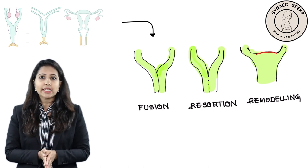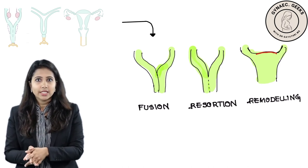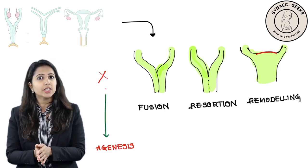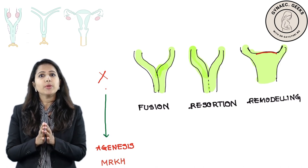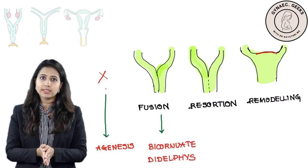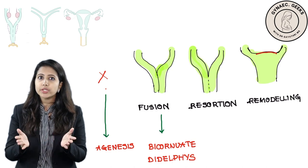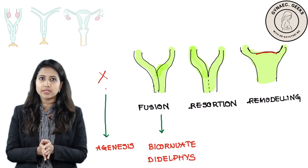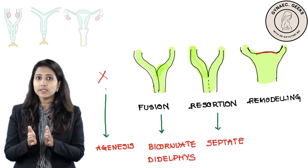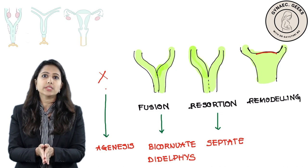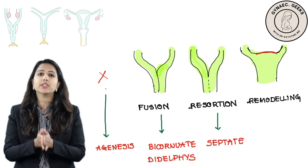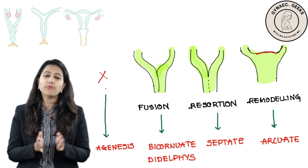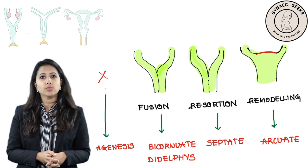Problems can occur at each of these levels. There could be problems in the development of the tract — that is, problems related to agenesis. There could be problems at the level of fusion of the two ducts — fusion defects — which includes uterine didelphys as well as bicornuate uterus. There could be problems in resorption, leading to septate uterus. Or finally, problems in remodeling of the fundus, leading to arcuate uterus.